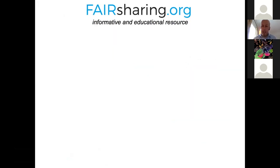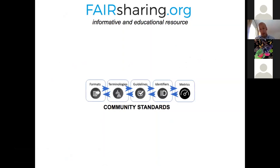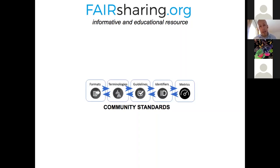What we try to do in FAIRsharing is provide an informative and educational resource by describing all of these standards with a set of metadata. We split standards into five types. First, models and formats — an example from life sciences would be the FASTA format for nucleotide sequences, or JSON. Then terminologies — these are controlled vocabularies and ontologies. An example would be the CHMO vocabulary for humanities or the Gene Ontology for life sciences.